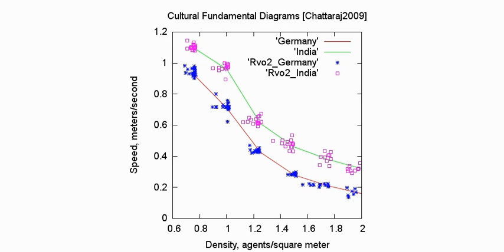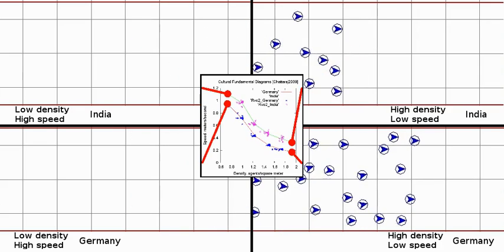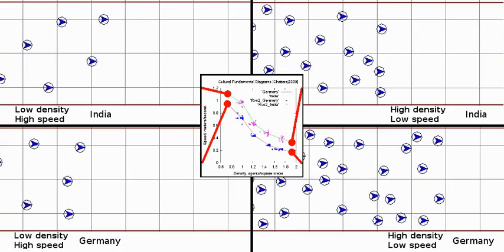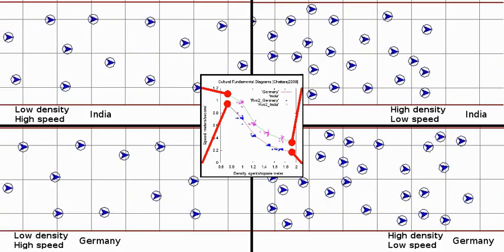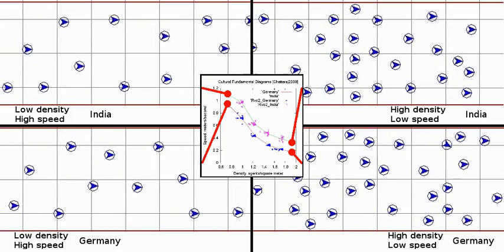The following video segment shows German and Indian behaviors for a low-density high-speed scenario as well as a high-density low-speed scenario. As you can see on the top two videos, for the same density, agents with an Indian behavior travel slightly faster than their German counterparts on the two bottom videos.